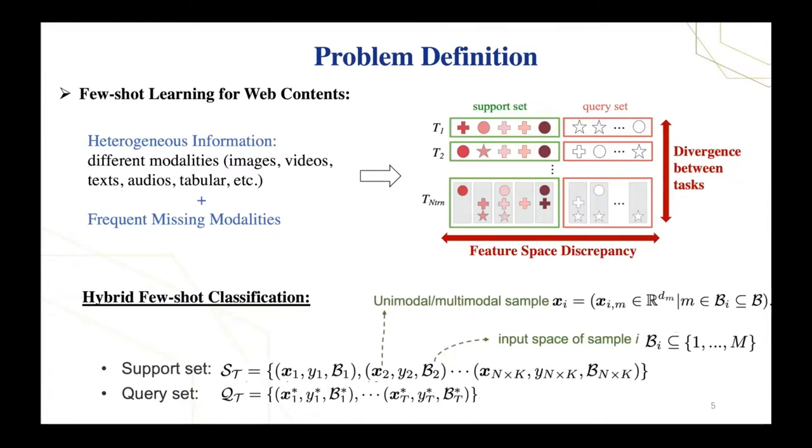So the support and query data samples within each few-shot task is further divided into multiple feature spaces, where each sample is associated with an additional indicator B_i to specify which feature space it belongs. This indicator distinguishes each sample so different types of data will be treated differently.